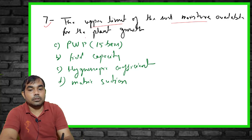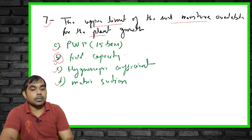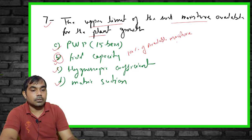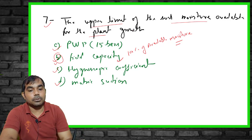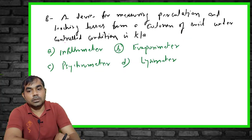The seventh MCQ: what is the upper limit of soil moisture available for plant growth? Options include permanent wilting point, field capacity, hygroscopic coefficient, and matric suction. The right answer is field capacity. Field capacity is also known as 100% of available moisture — it represents the upper limit of soil water availability to the plant.